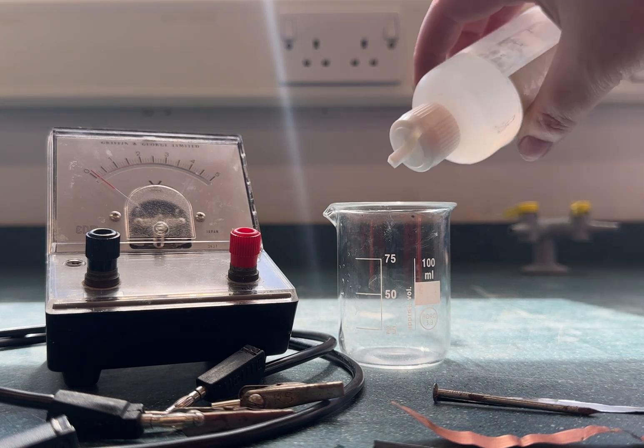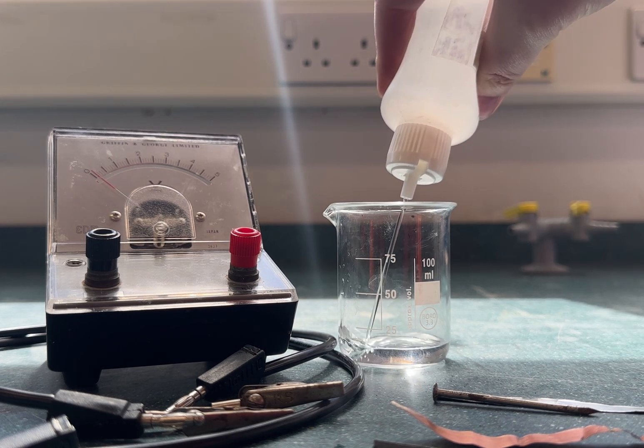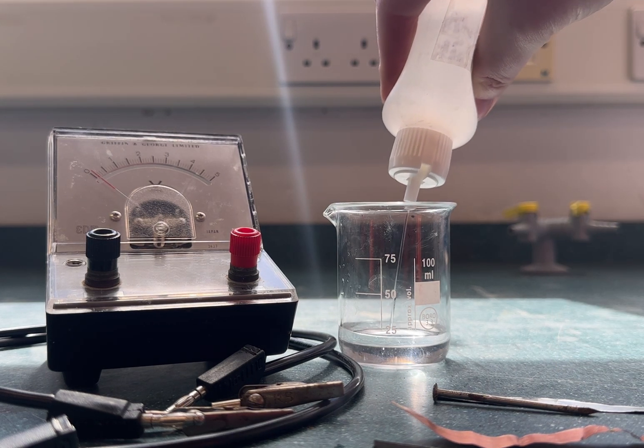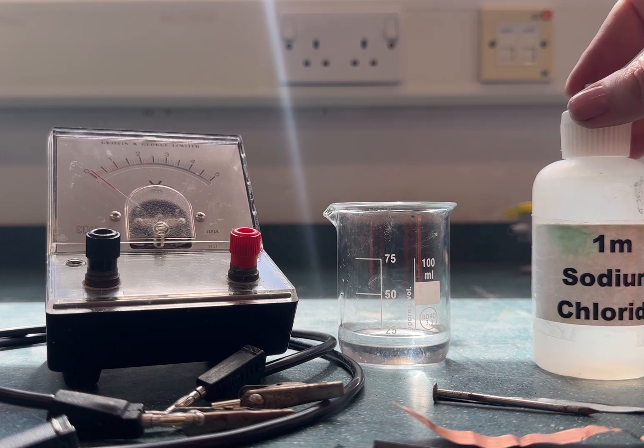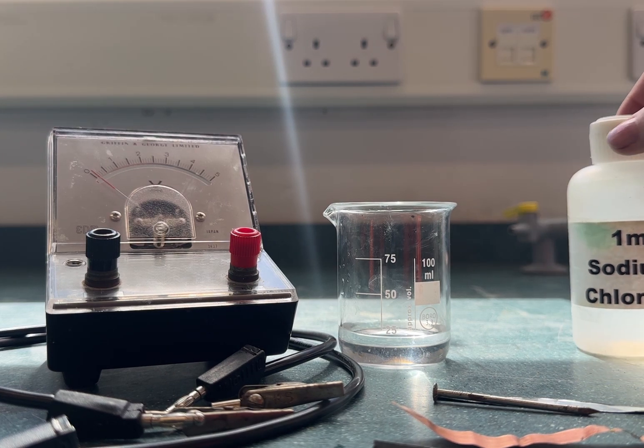To create an electrochemical cell we put the sodium chloride electrolyte into the beaker and then we place two of the electrodes into the beaker. We then connect these up using a voltmeter.